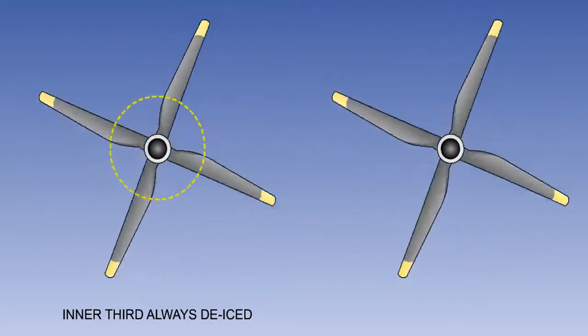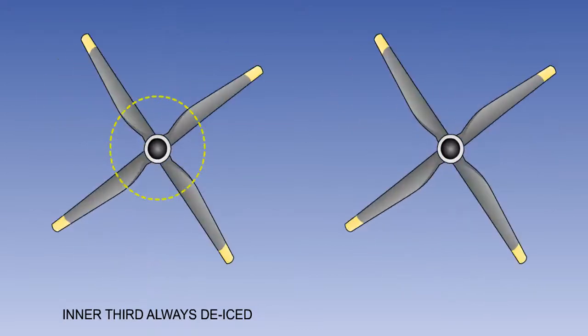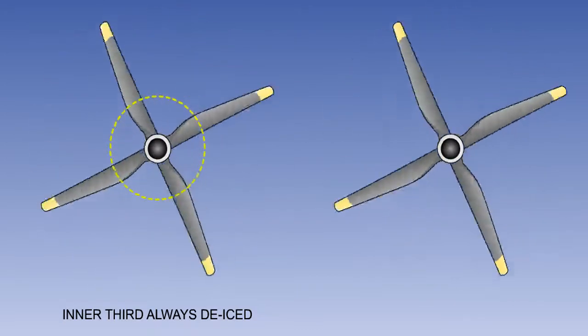Because of its thickness and lower speed, the inner third of the propeller blade is most susceptible to icing and is always de-iced.